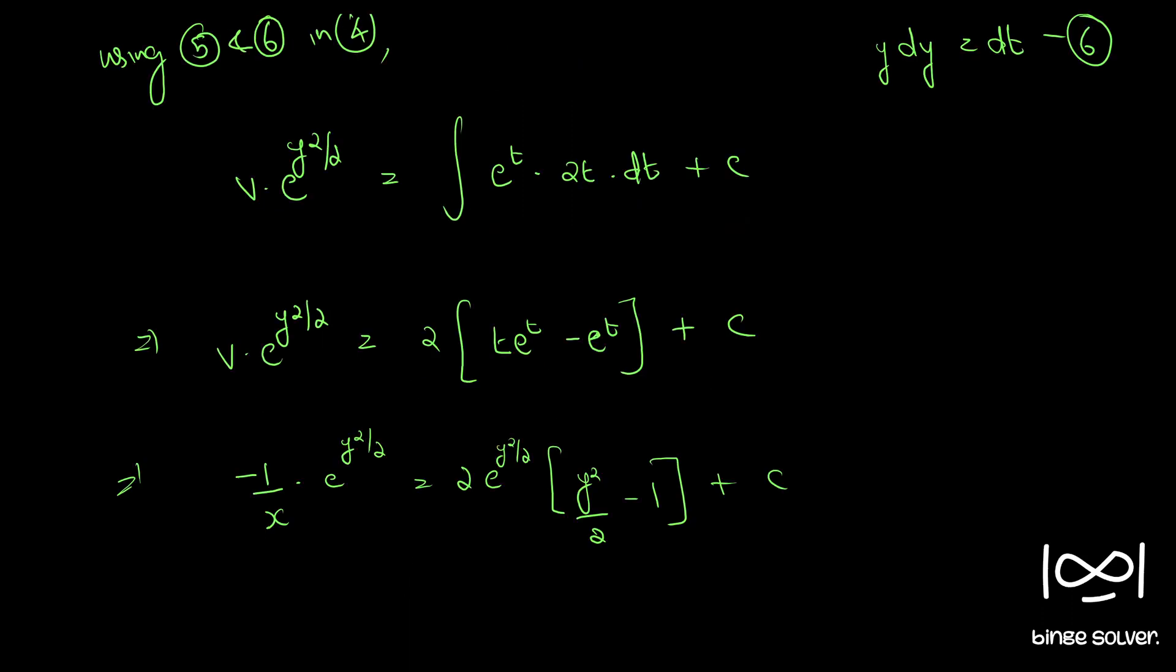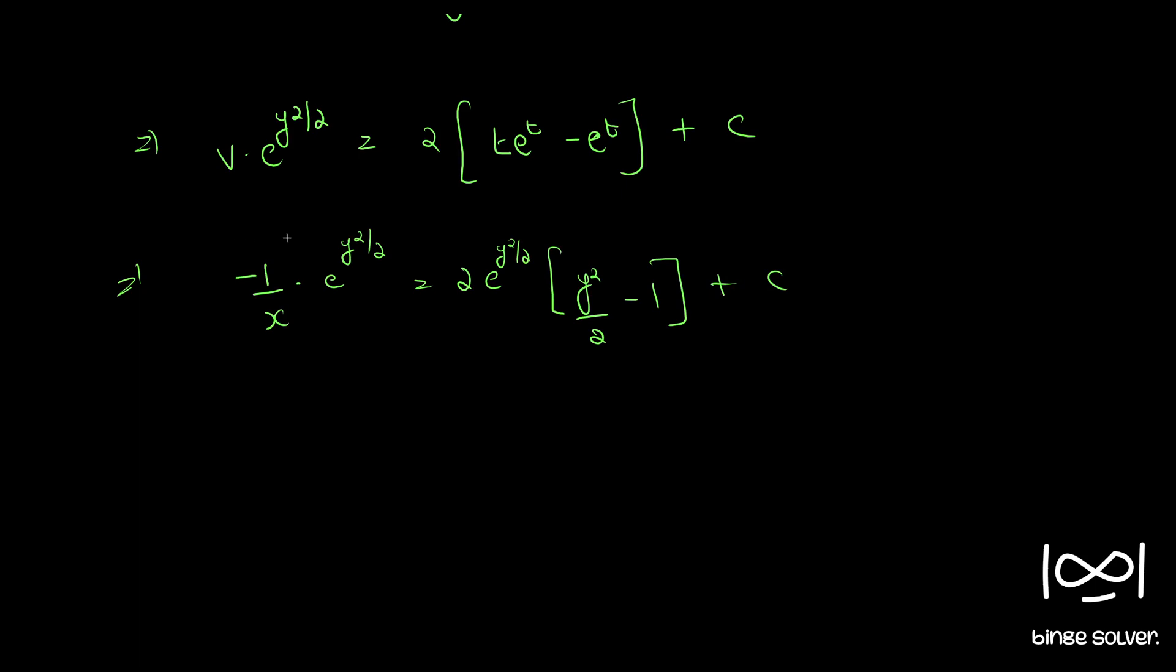Multiplying throughout by minus e raise to minus y square by 2, we get 1 by x equal to, taking this inside, 2 times y square by 2 becomes y square.